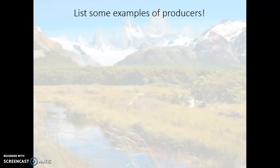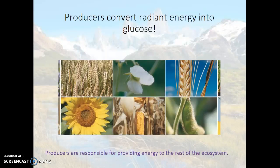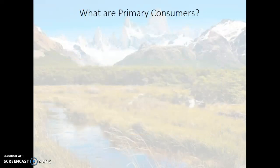Can you give me a list of examples of producers? Producers are responsible for converting radiant energy into glucose. They provide the energy for the rest of the ecosystem. Here are a couple pictured — all kinds of crops, things that we eat to help keep us alive too.